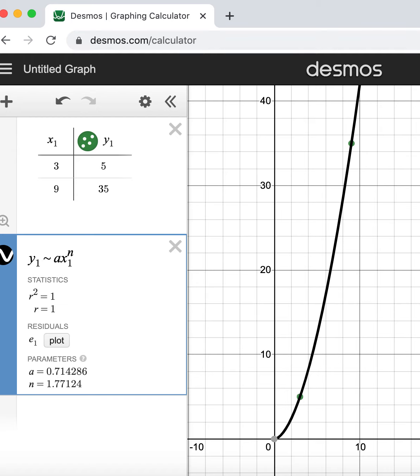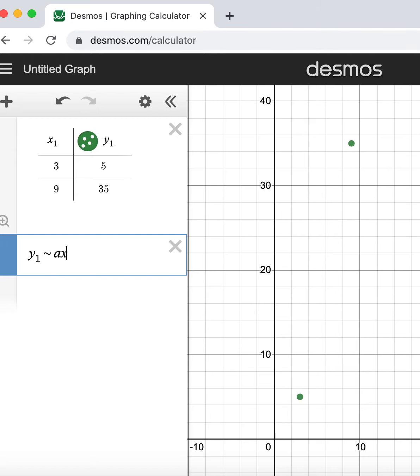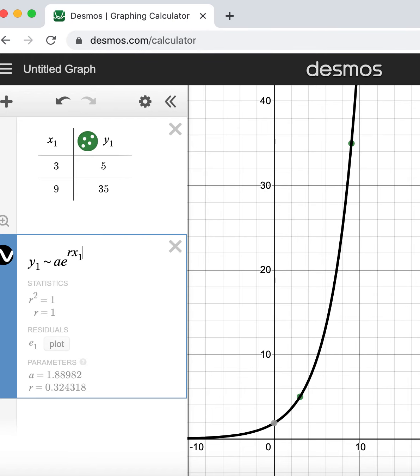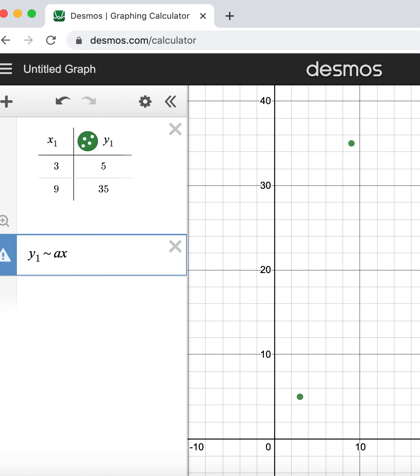In the past we had looked at ae to the x, or perhaps ae to the rx, and this would be an exponential function. But we don't want that this time, we actually want a power function. So we're going to make it ax to the power of n.